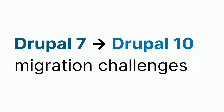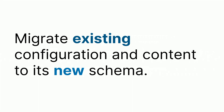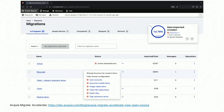Let's walk through a few of the challenges you face when doing a Drupal 7 to Drupal 10 migration. You probably have heard a lot of talks about this. We all know you have to migrate existing content and configuration to its new schema. In Drupal 7, content types were defined in code; now they're configuration. This is one area our Drupal community has excelled at — we have the Migrate module and the Acquia Migrate Accelerate, which was recently open-sourced.